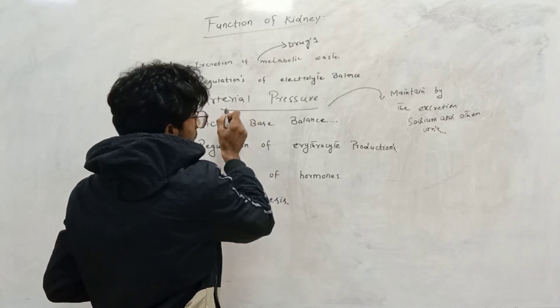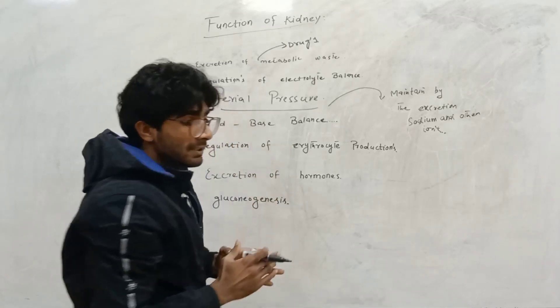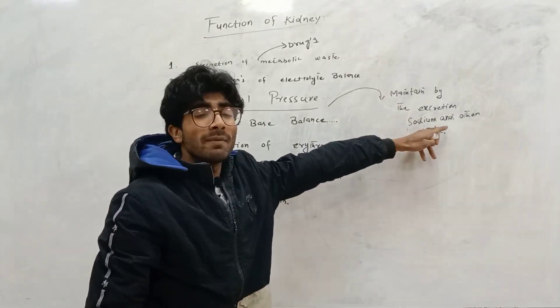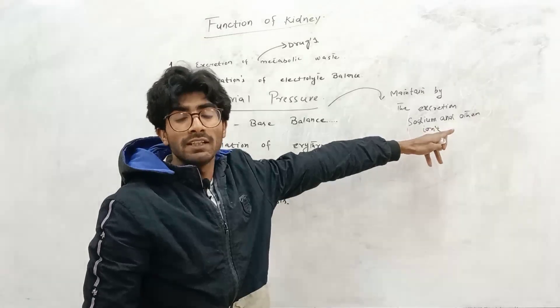Arterial blood pressure. Arterial blood pressure always is in normal situation when excretion of sodium and other ions in the body from the kidney.